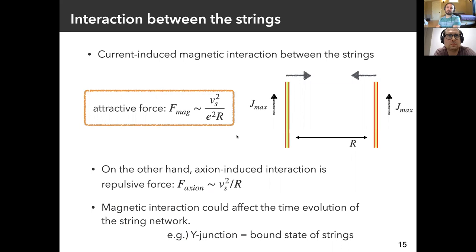This provides interesting implications for the interaction between strings. Consider two parallel superconducting strings carrying supercurrent J_max. These two strings feel an attractive magnetic force induced by the electric current. On the other hand, the strings also feel a repulsive axion-induced interaction. This magnetic interaction is comparable to the axion interaction, so it could affect the time evolution of the string network. For example, the strings could form so-called Y-junctions, which are bound states of strings.